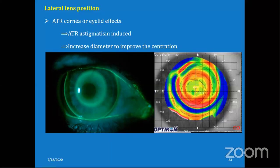Regarding hypermetropia correction with ortho-K: it is said to correct up to plus 3 diopters, but the results are not considered very good.